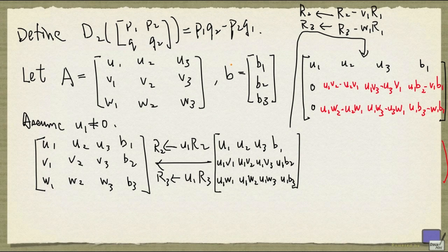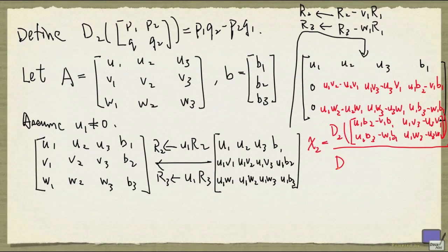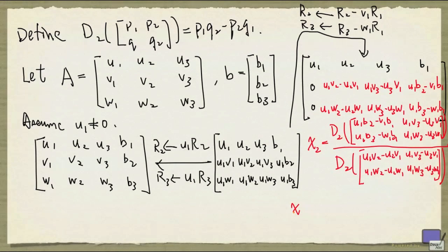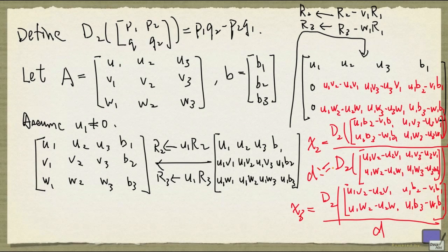So let me change the color of this system. And we're going to apply the result from the previous case to this system. So x2 will be d2 of this matrix here, but with the first column replaced by the right-hand side, and divided by d2 of this matrix here. And x3 is going to be this, where d is defined to be this thing here. And we know that d has to be non-zero.